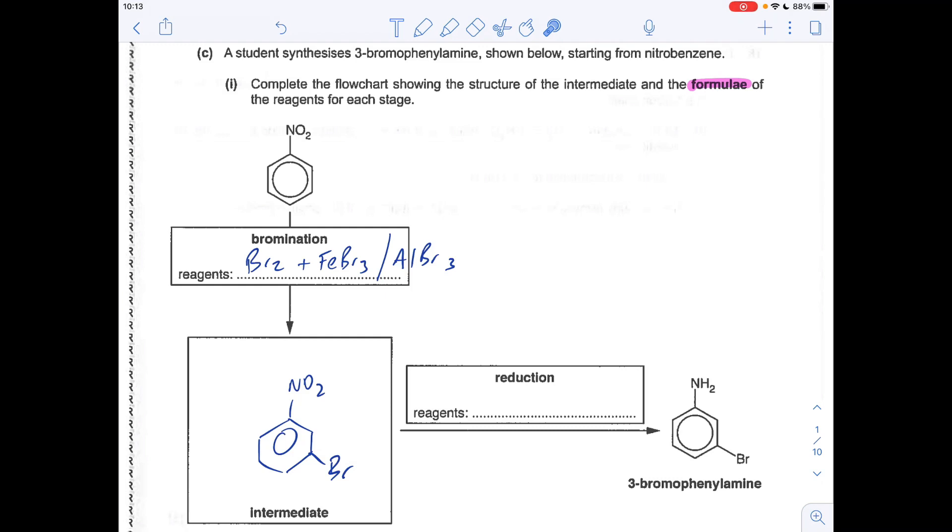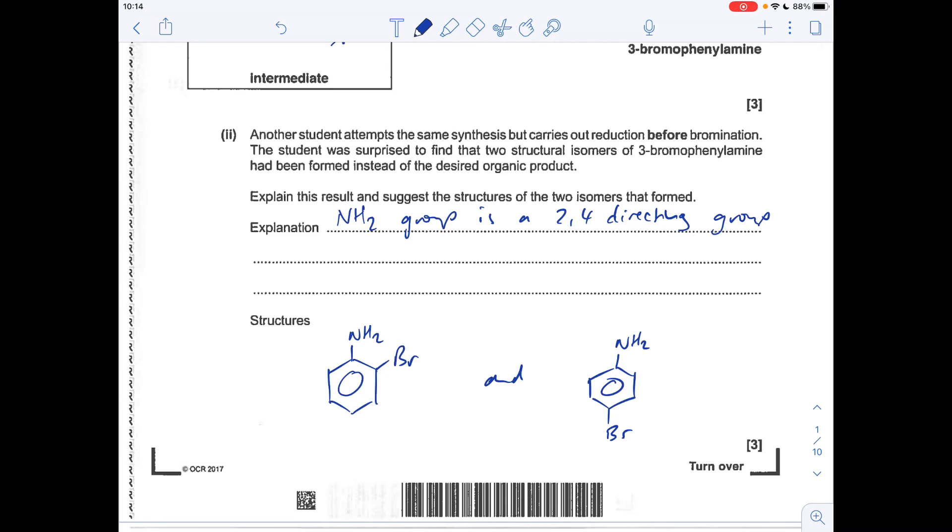Second part of the question, we've got to go from the nitro group to the amino group. So we reduce that with a mixture of tin and concentrated hydrochloric acid.